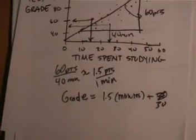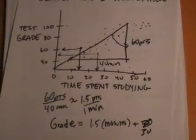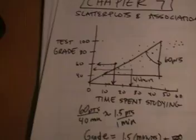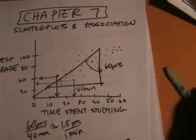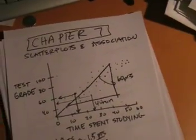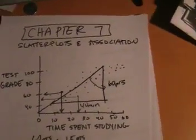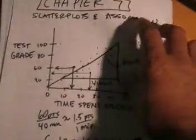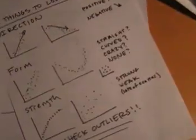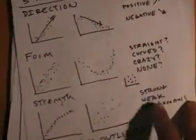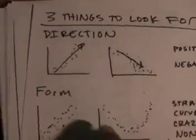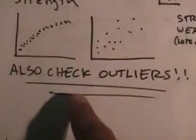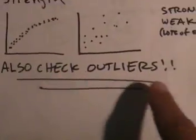The big idea here to start off Chapter 7 is simply this: take a look at the scatter plot and look for three things. Check the direction, the form, the strength, and see if there's any outliers.